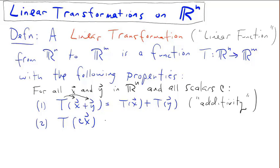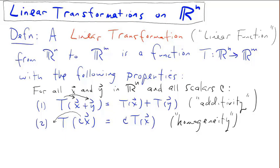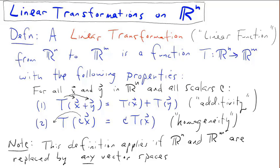Property two: T of a scalar C times x is equal to C times T of x. In other words, you can pull that scalar in front of T. We'll refer to this property as homogeneity. This definition applies in all vector spaces — if Rn and Rm are replaced by any vector spaces, we still get the same definition. For this function T, Rn is the domain and Rm is the co-domain.